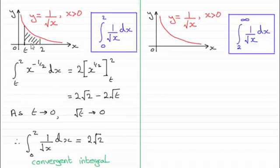And we found that we had to use this method here. And if we did, we found that it approached a value 2 root 2, and we said that it was a convergent integral. So if you're unsure of this method, do go back and check it out.